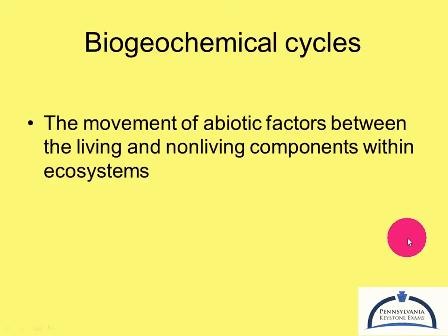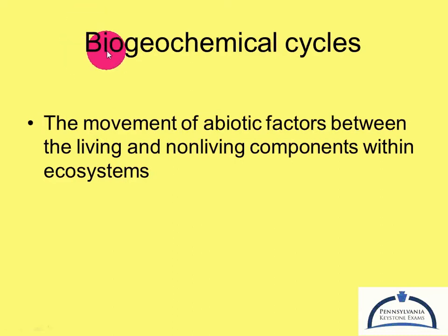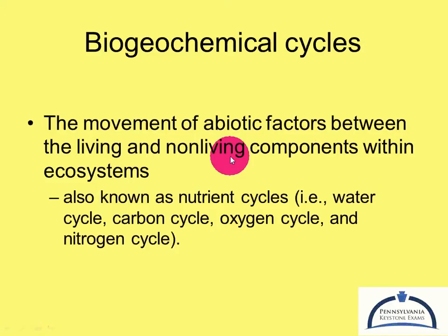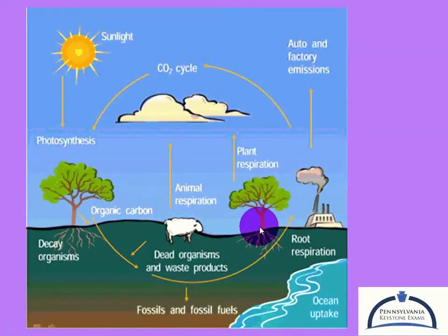We talked about important elements way back in the first podcast: carbon, hydrogen, oxygen, phosphorus, sulfur, and nitrogen. These elements are important for all living things, and in an ecosystem there are different cycles showing the different forms of carbon and nitrogen, how they're used by organisms, and how they go from phase to phase. We call them biogeochemical cycles — 'bio' referring to living organisms, and 'geo' because some of these things get stored in the Earth's crust or the water. We can also call them nutrient cycles: water cycle, carbon, oxygen, nitrogen — there's a whole bunch of them.